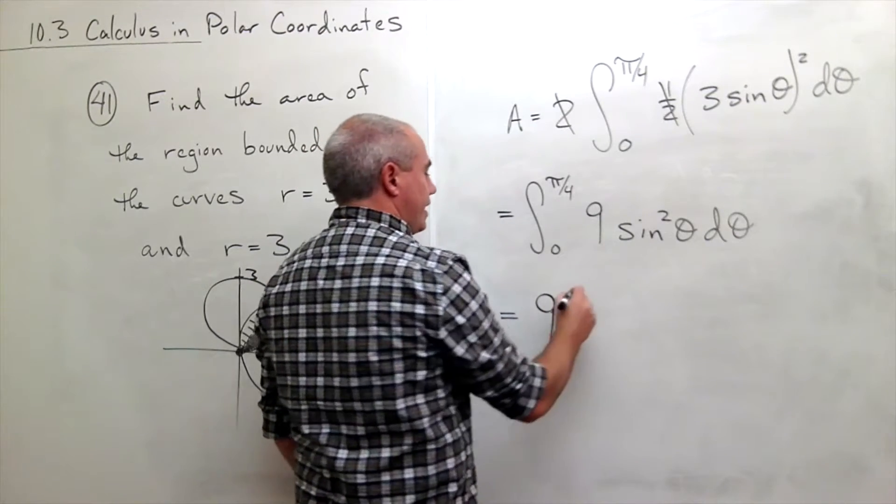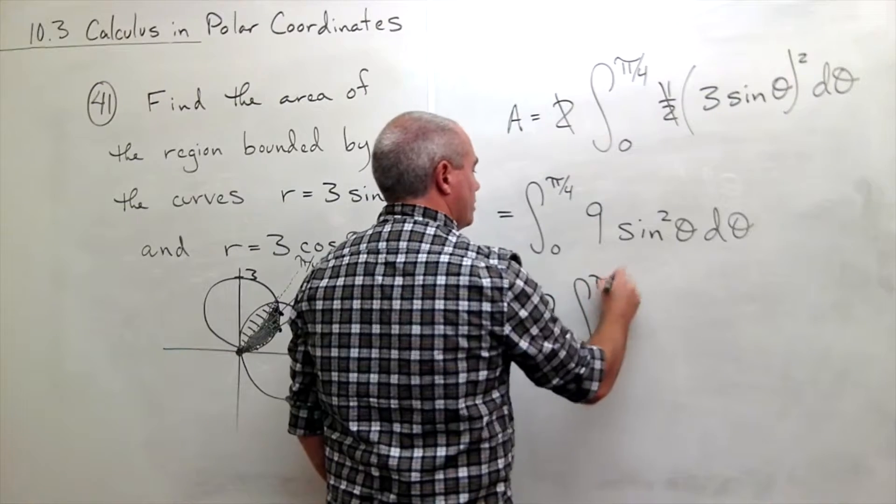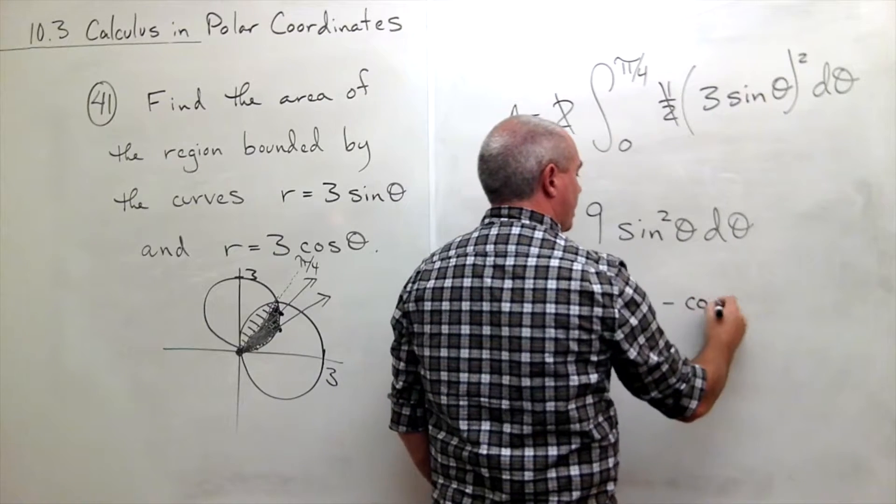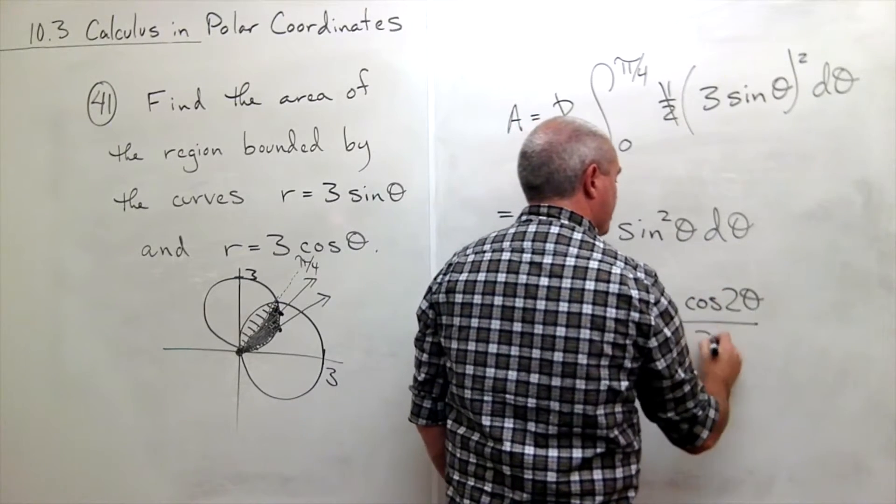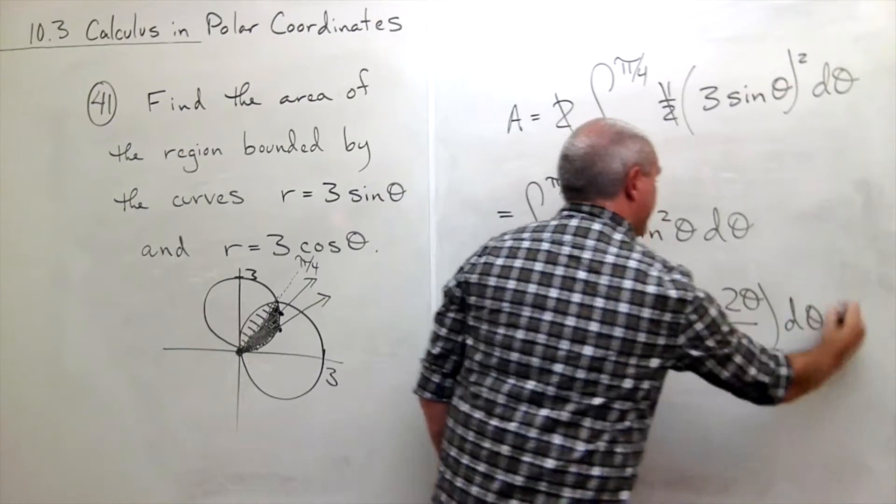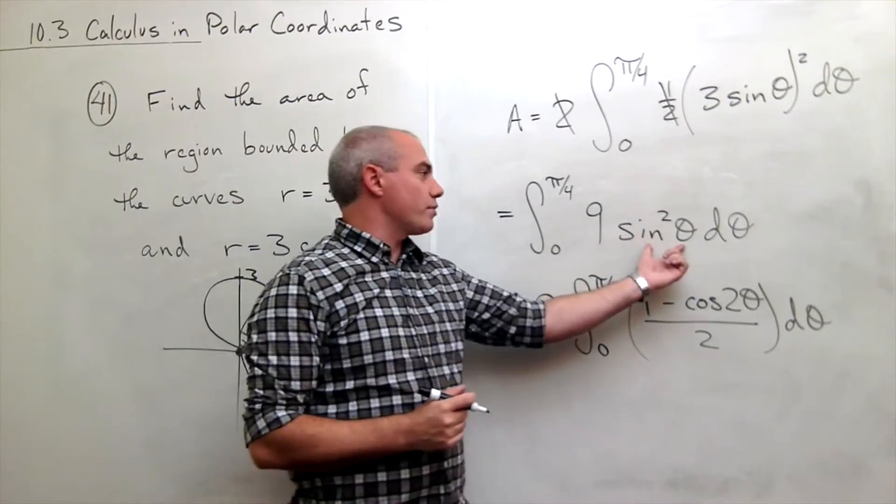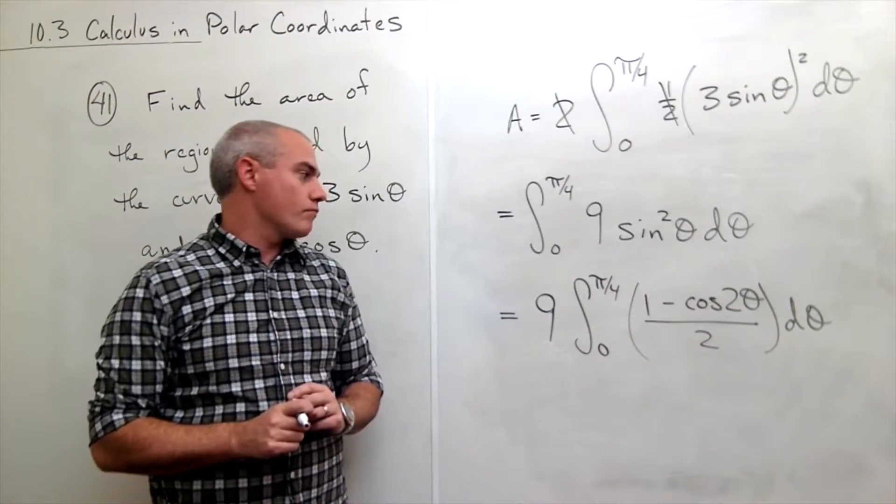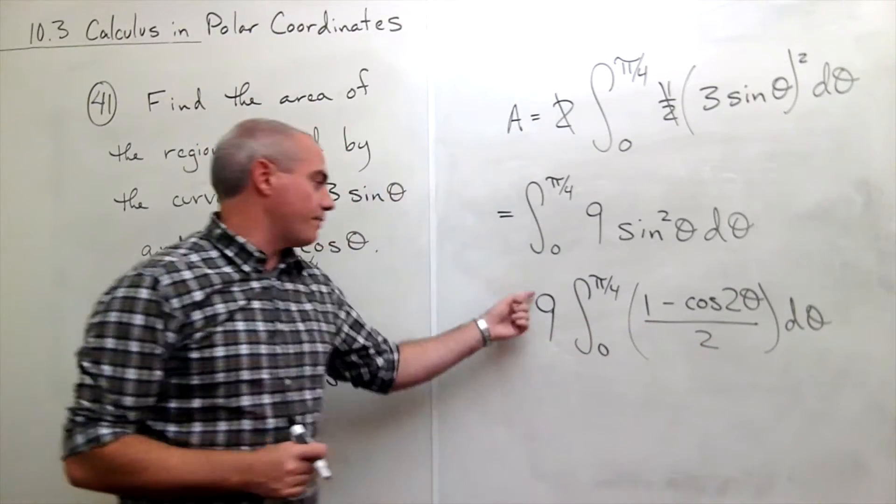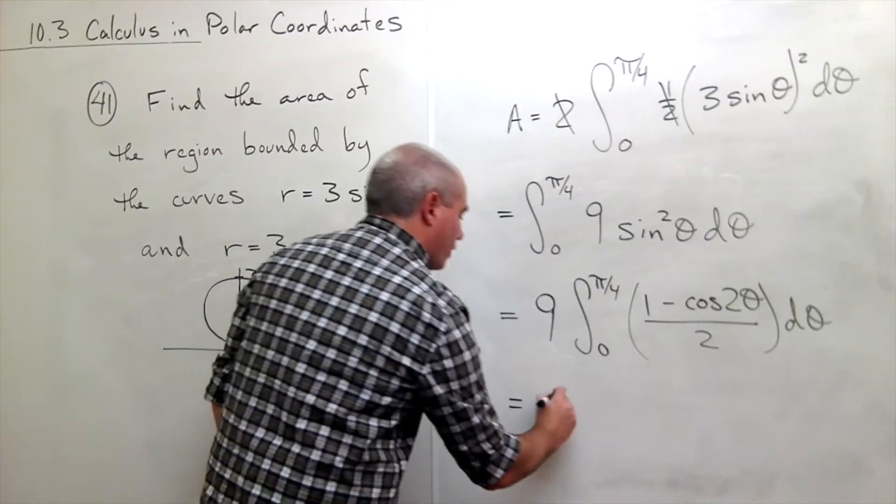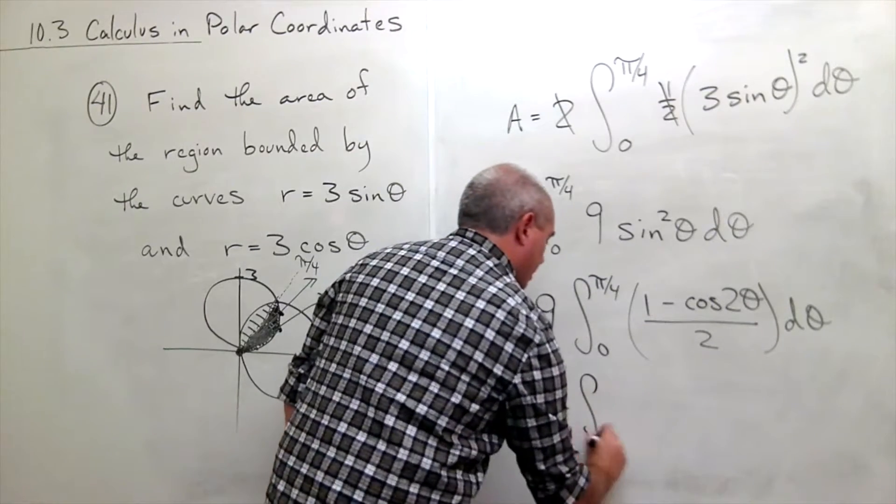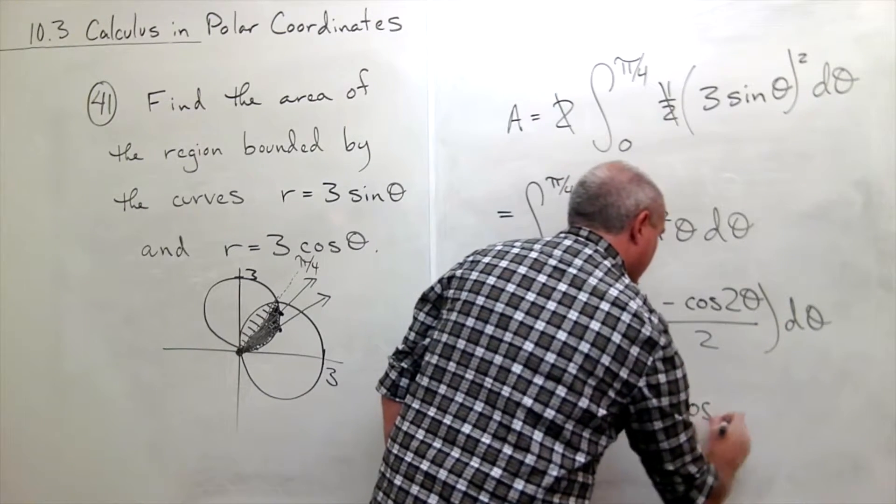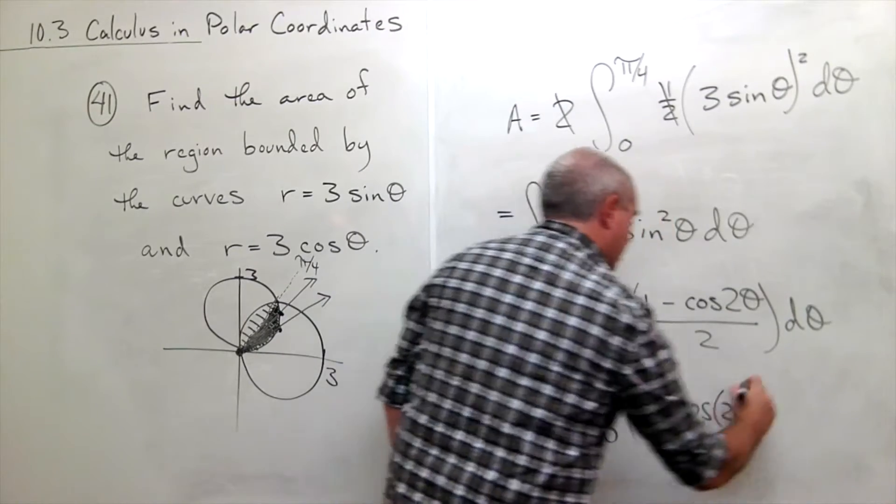So I'm going to rewrite this. I'll pull the nine outside the integral. And I get integral from zero to pi over four of one minus cosine of two theta over two d theta. So I just replace sine squared of theta by one minus cosine of two theta over two, which is a half angle identity. I could pull this two out and just make this nine halves. So I have nine halves on the outside integral from zero to pi over four of one minus cosine of two theta d theta.